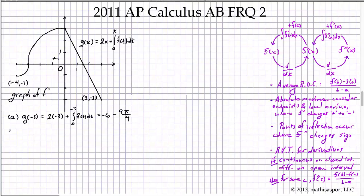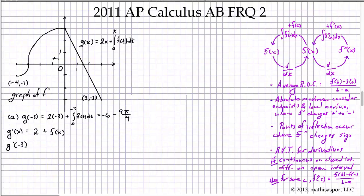Next, we're looking for g'(x). The derivative of a sum is the sum of derivatives: the derivative of 2x is just 2, and from the Fundamental Theorem of Calculus, the derivative of the integral expression is simply f(x). So g'(x) = 2 + f(x). Evaluating that at -3, we have 2 plus f(-3), and f(-3) = 0, so g'(-3) = 2. That takes care of Part A.